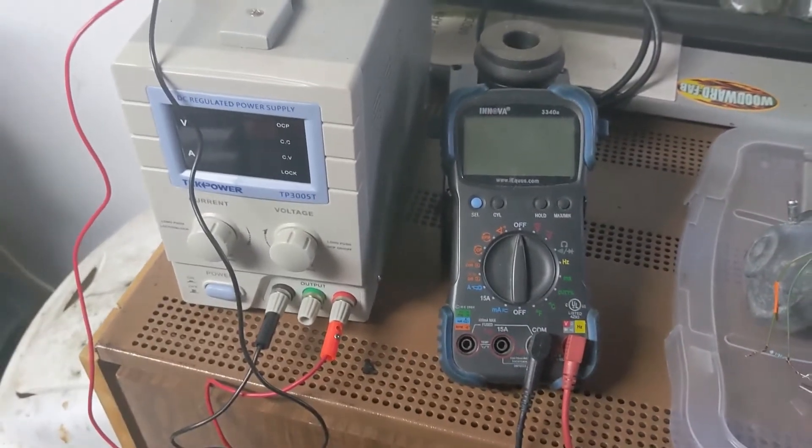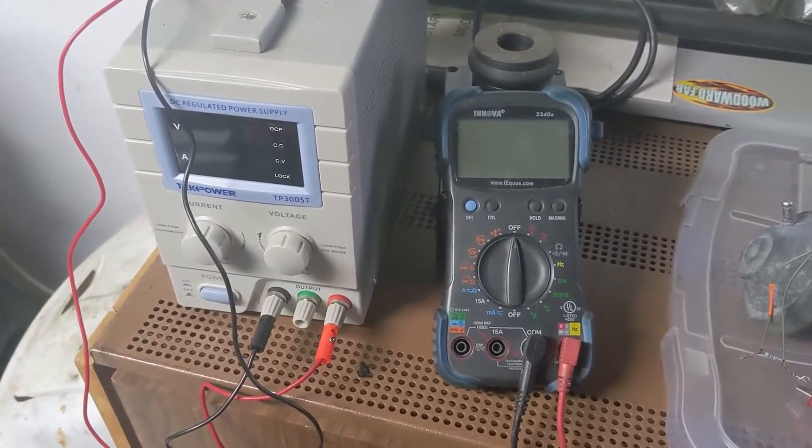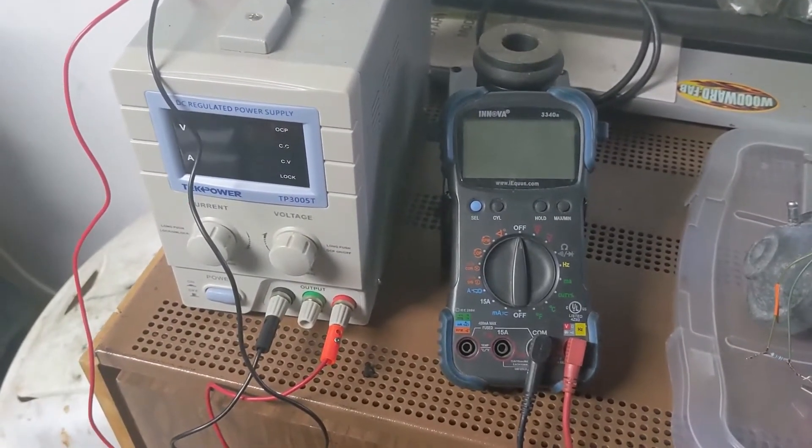Hey guys, since I had all the things out already, I thought I would do a little bit of a more in-depth or maybe a different approach to testing the Hall sensor on a classic Saab 900.